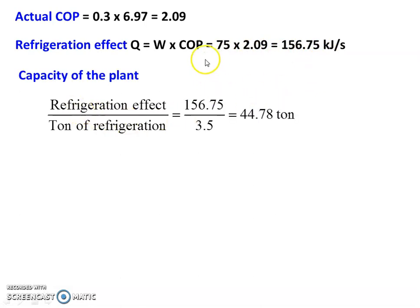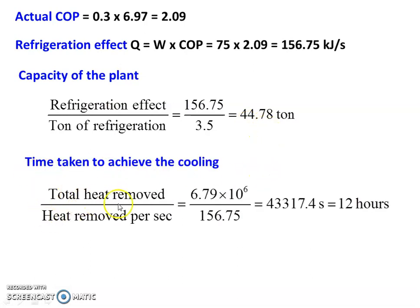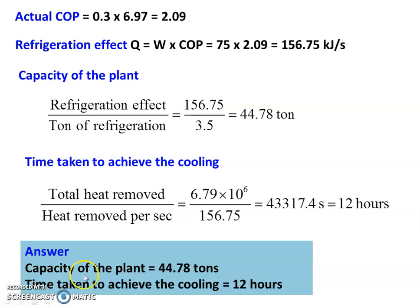Capacity of the plant equals refrigeration effect divided by ton of refrigeration: 156.75 divided by 3.5 equals 44.78 tons. Time taken to achieve cooling equals total heat removed divided by heat removed per second: 6.79 times 10^6 divided by 156.75 equals 43,317 seconds, which equals 12 hours. Answers: capacity of the plant equals 44.78 tons and time taken to achieve the cooling is 12 hours.